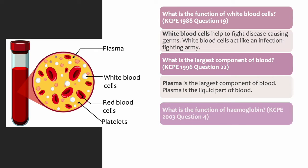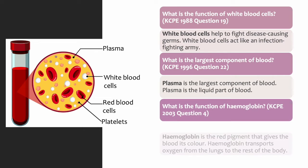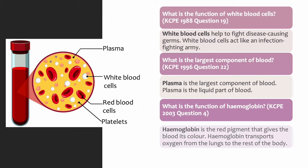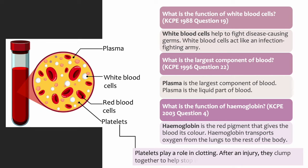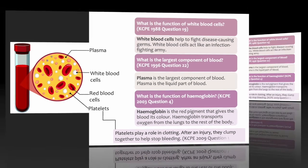What is the function of hemoglobin? Hemoglobin is the red pigment that gives the blood its color. Hemoglobin transports oxygen from the lungs to the rest of the body. Platelets play a role in clotting after an injury — they clump together to stop the bleeding.